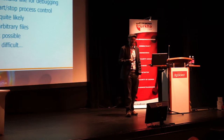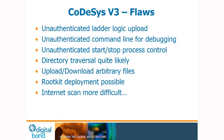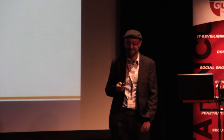CODESYS version 3 has all the same flaws: unauthenticated process control upload and download, an unauthenticated command line, the ability to start and stop process control. Directory traversal is quite likely, and rootkit deployment will probably also work. We did develop a rootkit for version 2 for one PLC but haven't done it for version 3 yet. Scanning for these on the internet turns out to be a lot more difficult.